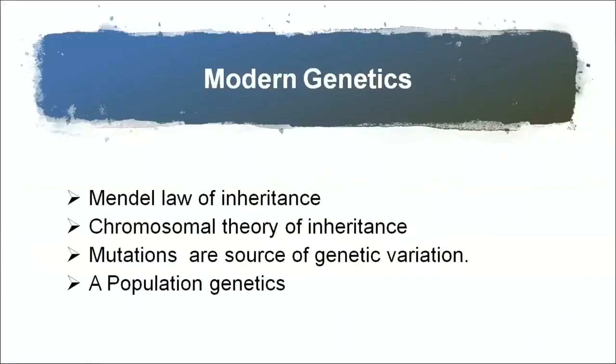In modern genetics, in the early 20th century, a lot of work was done. First was Mendel's law of inheritance. Then the chromosomal theory of inheritance given by Sutton and Boveri, which clearly showed that chromosomes are the carriers of hereditary material. Then mutations were identified as a source of genetic variation, responsible for the variability in organisms. Then population genetics studied how nature selects individuals through selective pressure in a population.